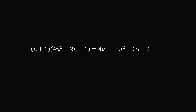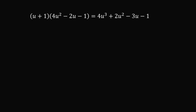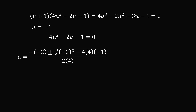We have shown that u plus 1 multiplied by the quadratic 4u squared minus 2u minus 1 equals the original cubic equation. Setting this equal to 0 means either the linear term is zero — so u equals negative 1 — or the quadratic is zero. Solving the quadratic with the quadratic formula gives us two more possibilities: u equals 1 plus or minus root 5, all over 4.